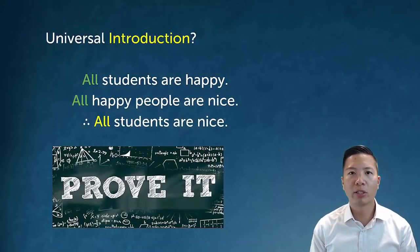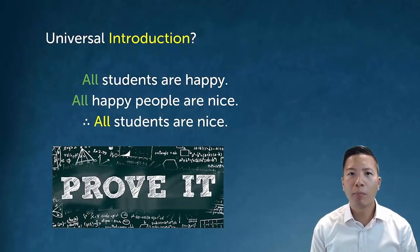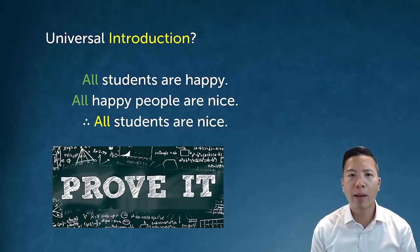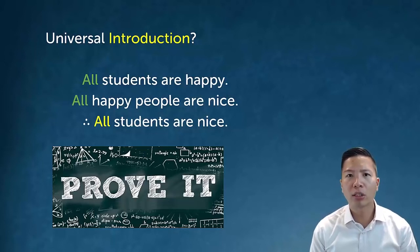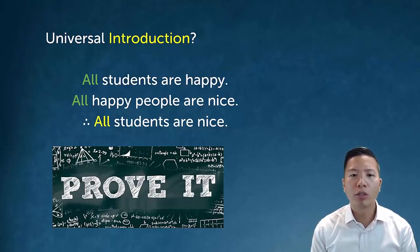We're only missing one more of our basic rules, which is going to be universal introduction. But there's a problem — is there such a rule as universal introduction? Could this ever actually happen or make sense? Here's an example of how I would need to prove some sort of universal claim: All students are happy. All happy people are nice. Therefore, all students are nice. How could I prove that this is valid?